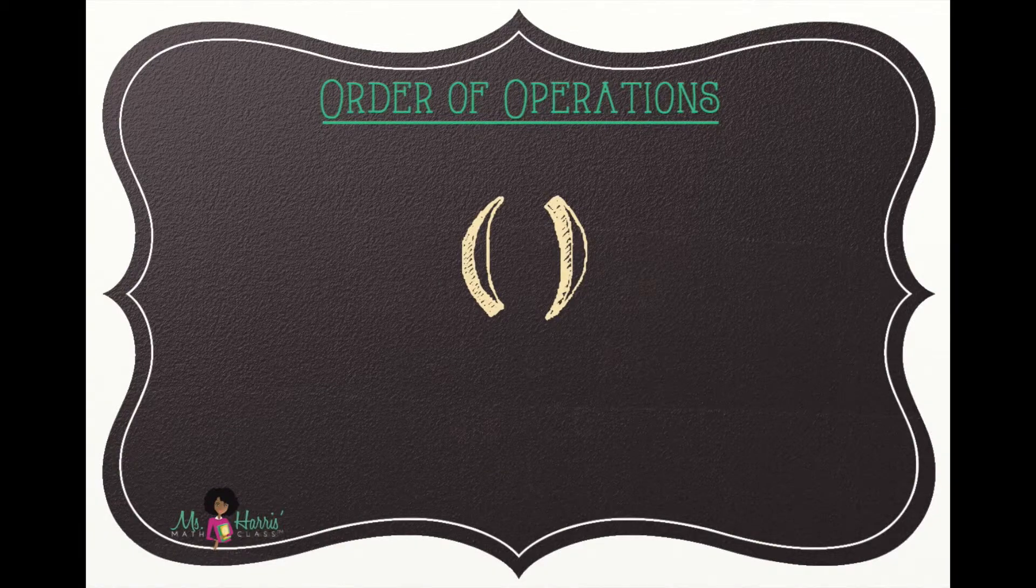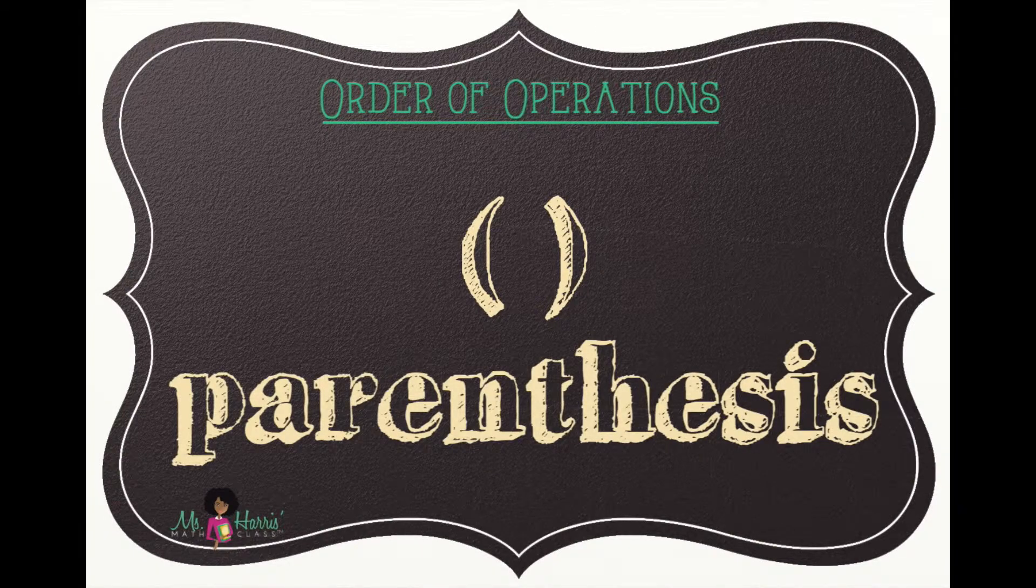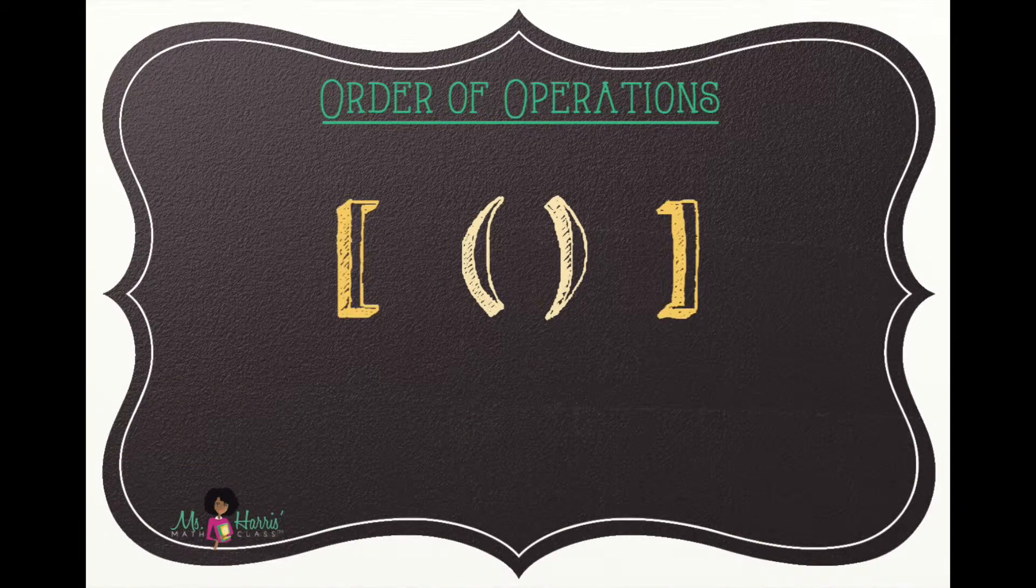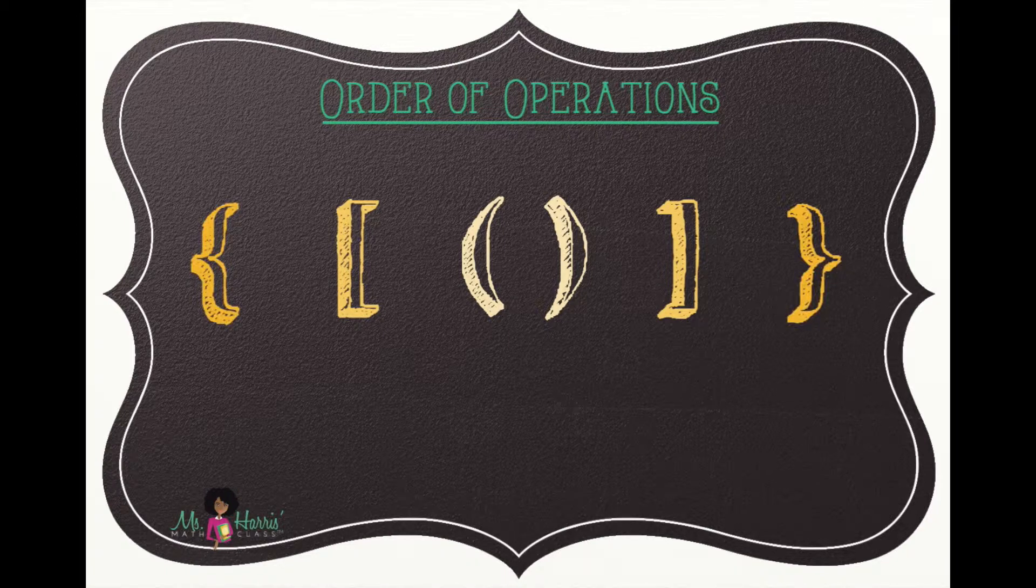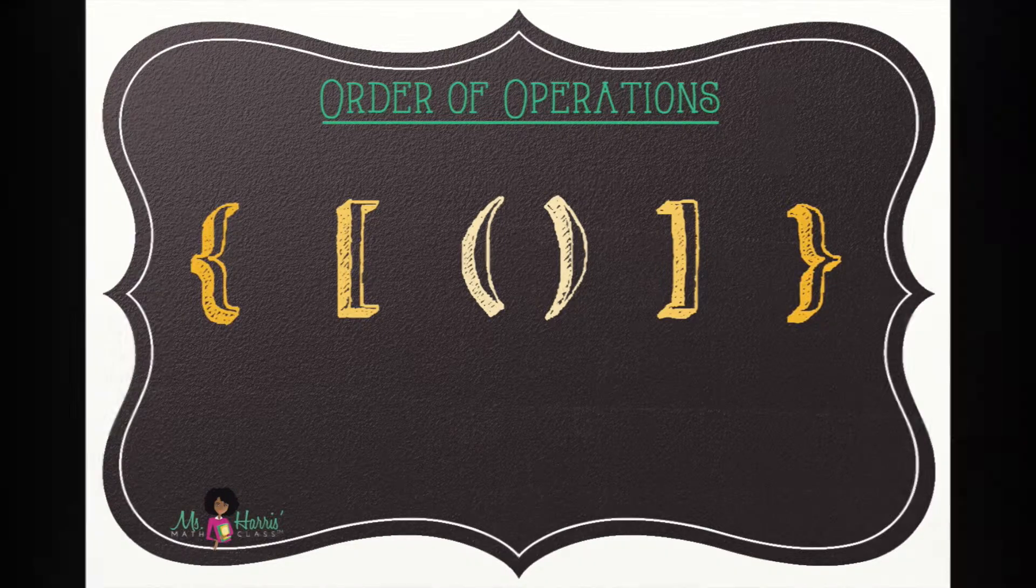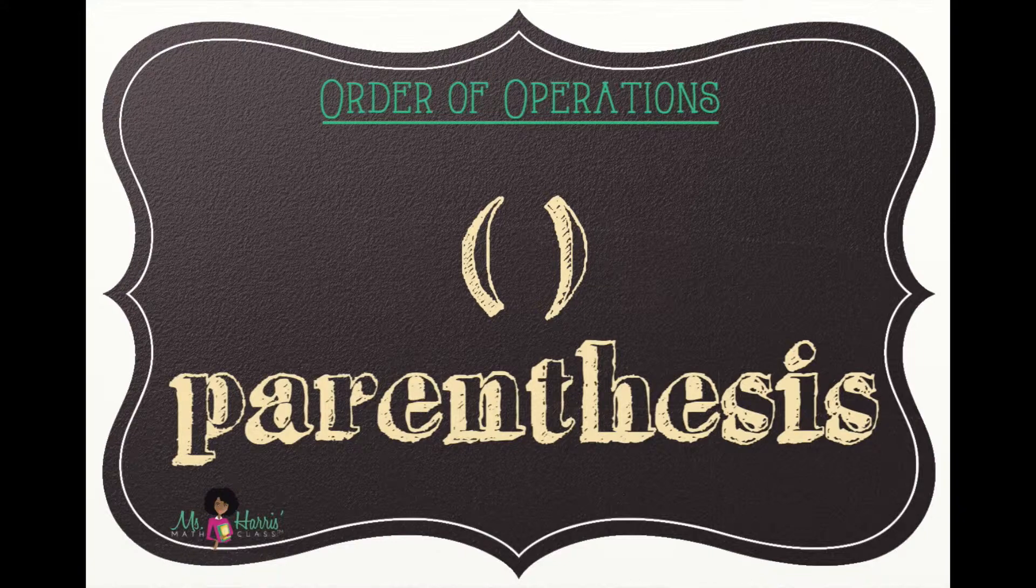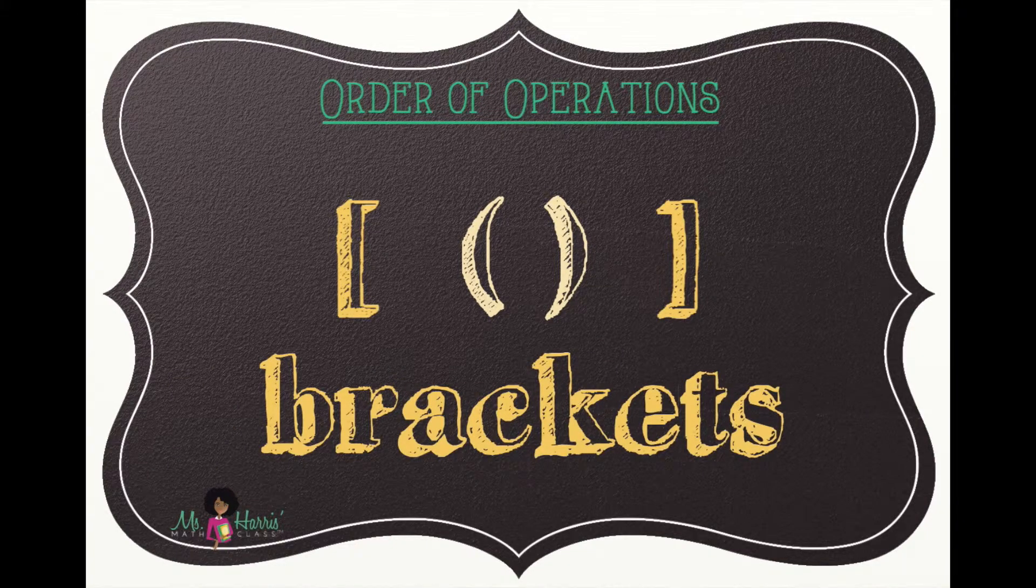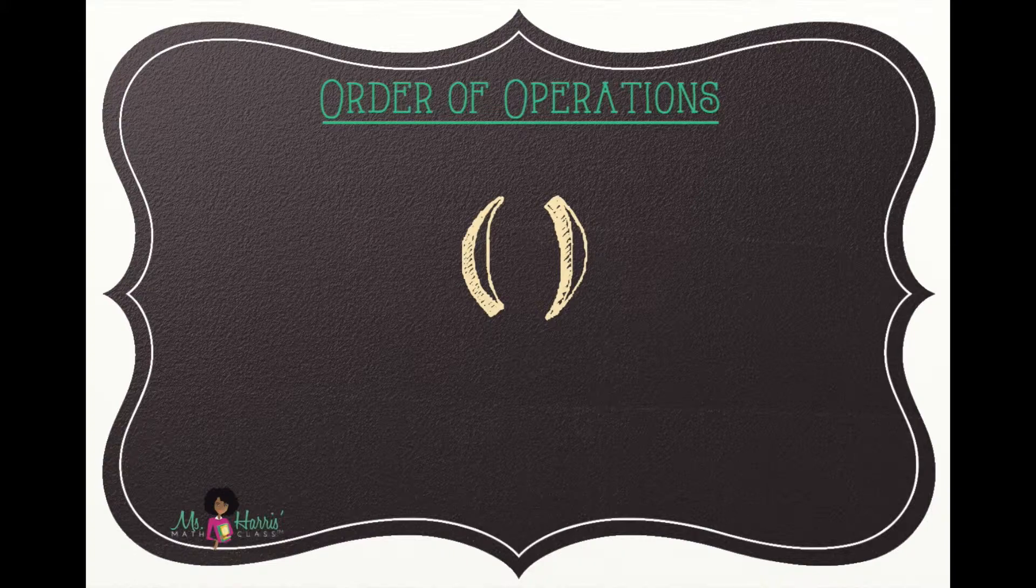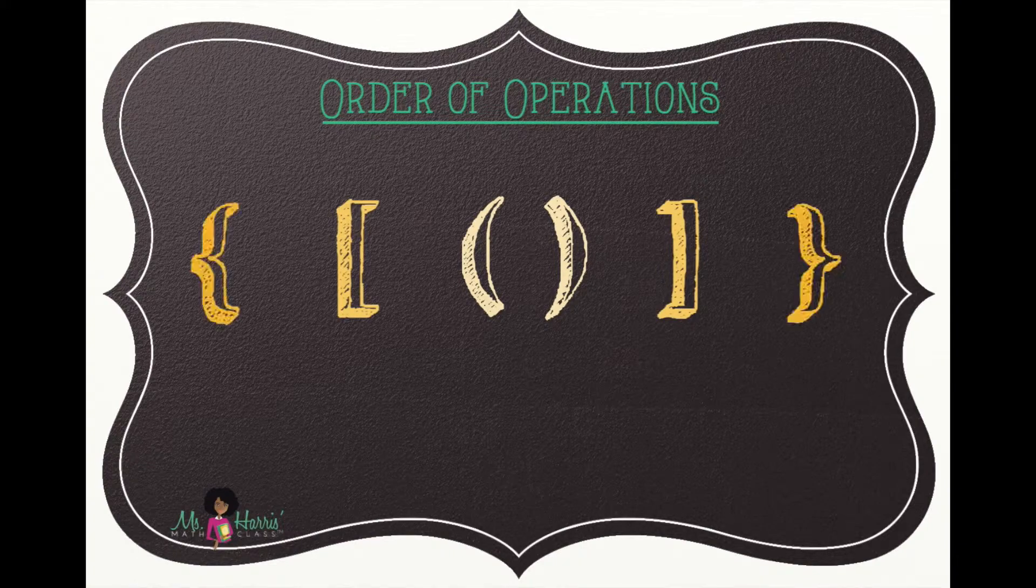Though we write P for parentheses, it comprises all of the grouping symbols, which is sometimes why you'll see it written as G or GEMDAS. Parentheses is your innermost grouping symbol, followed by brackets and braces. Within PEMDAS, you start with parentheses and work your way out.